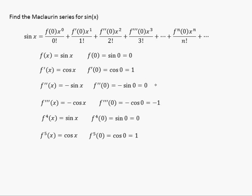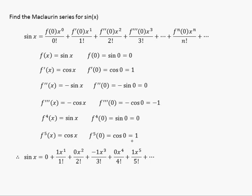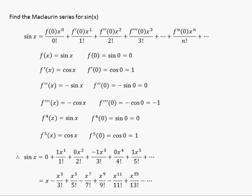Now I substitute these numbers into the formula. I get zero, then one times x to the one over one factorial, plus zero times the second term, plus negative one times x cubed over three factorial, plus zero times x to the fourth over four factorial, plus one times x to the fifth over five factorial, etc. Getting rid of all the zeros and continuing the pattern, you end up with alternating signs on all the odd powers and odd factorials.